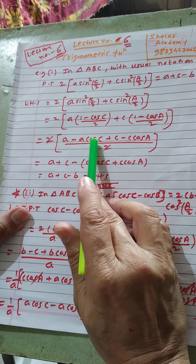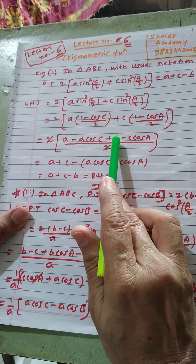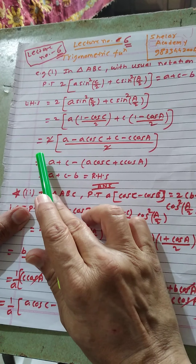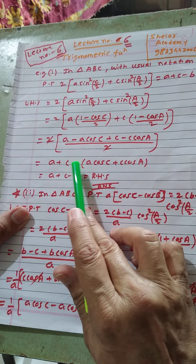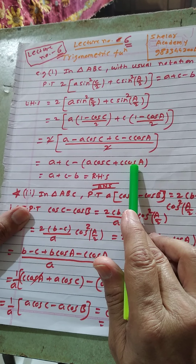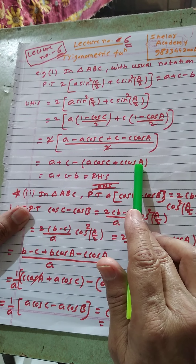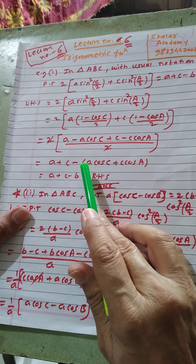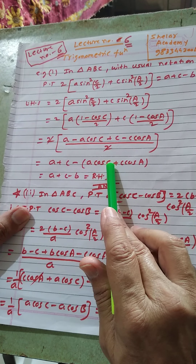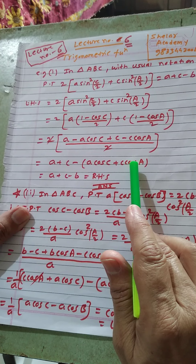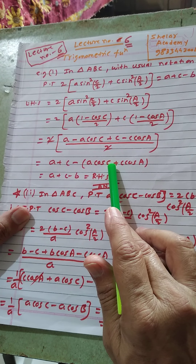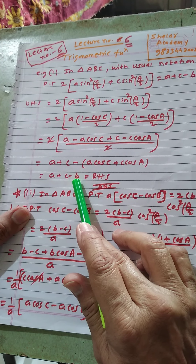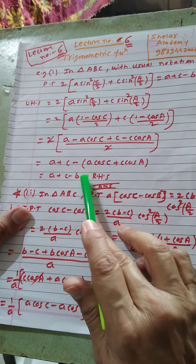This gives 2[(a − a cos C)/2 + (c − c cos A)/2]. Taking LCM, the 2s cancel, giving a + c − (a cos C + c cos A). By the projection rule, a cos C + c cos A = b. Therefore the answer is a + c − b, which equals RHS.